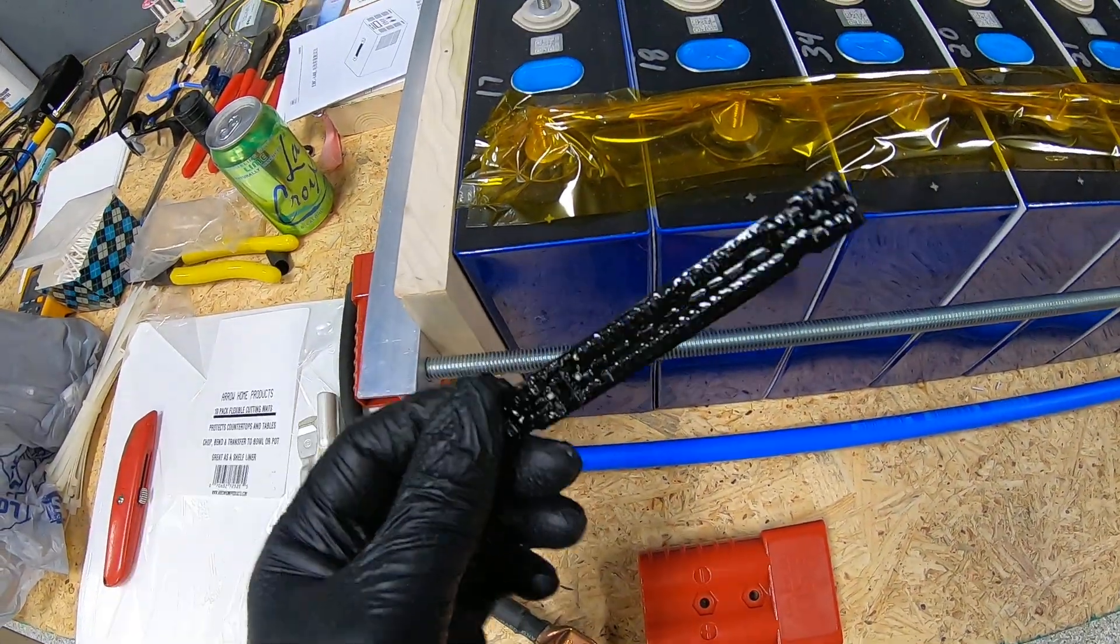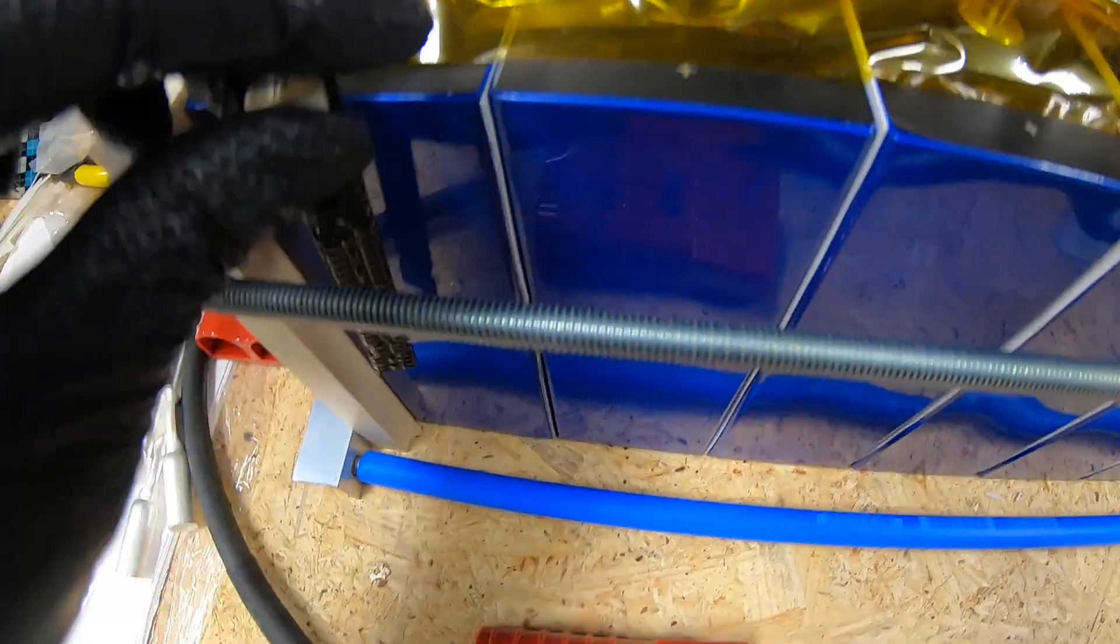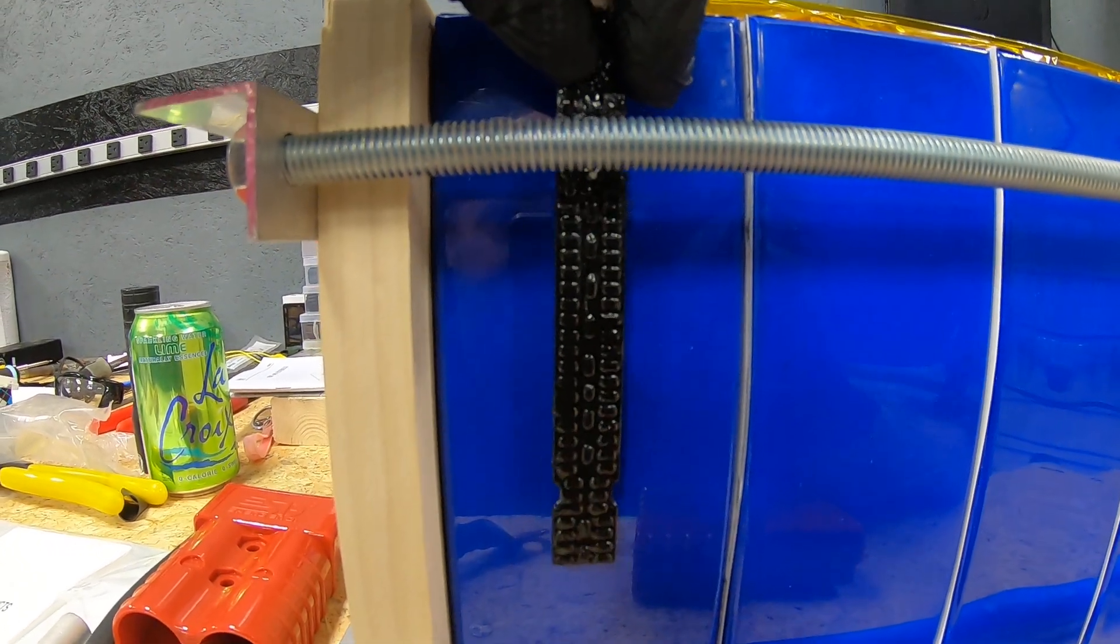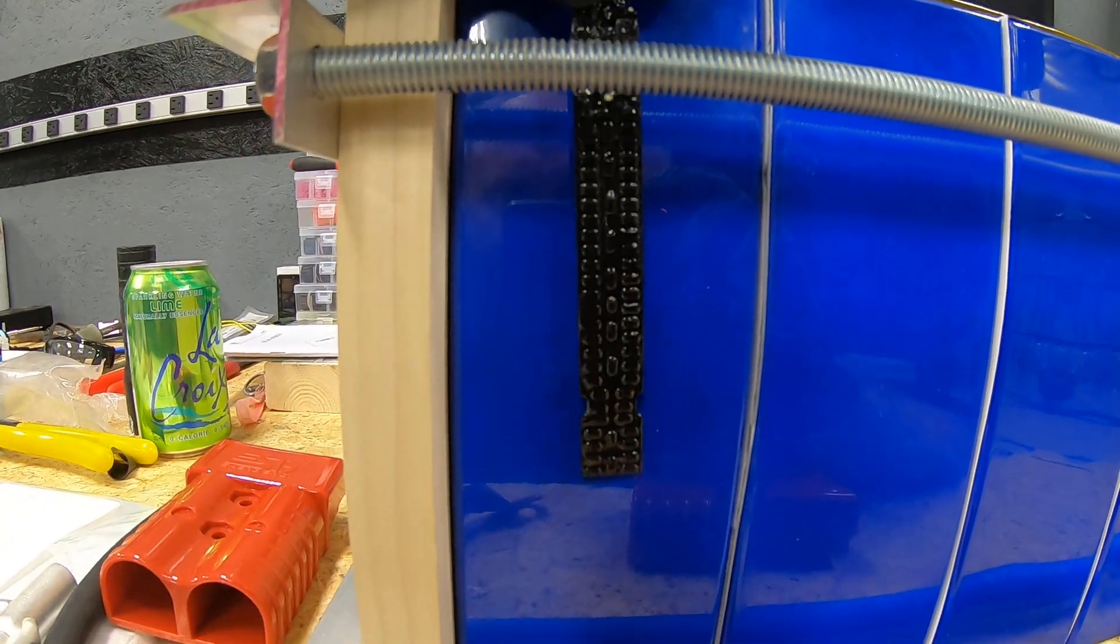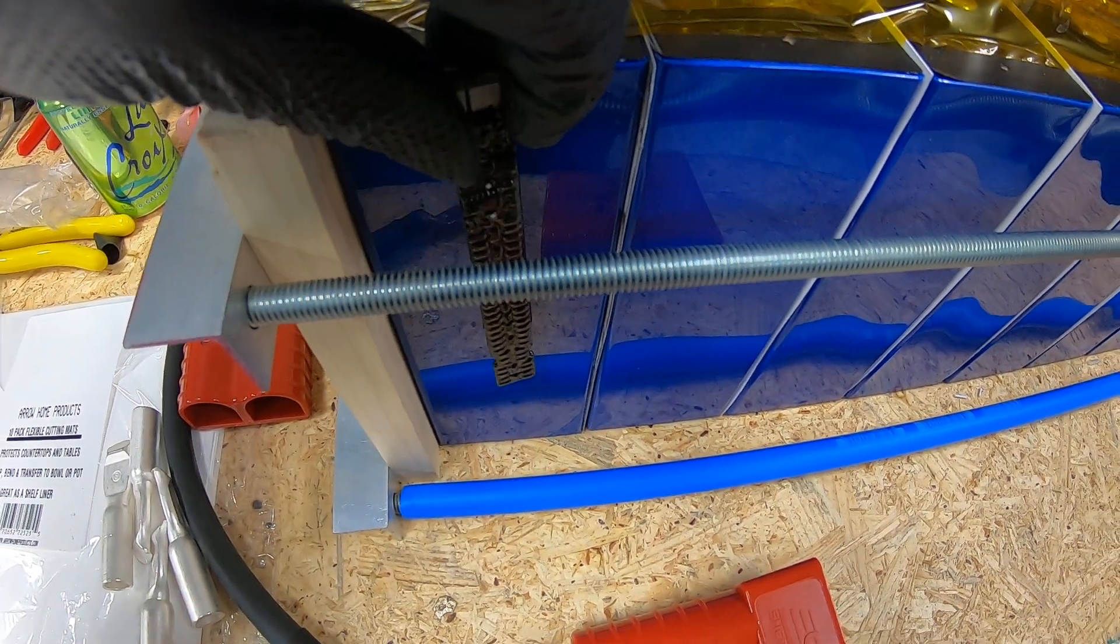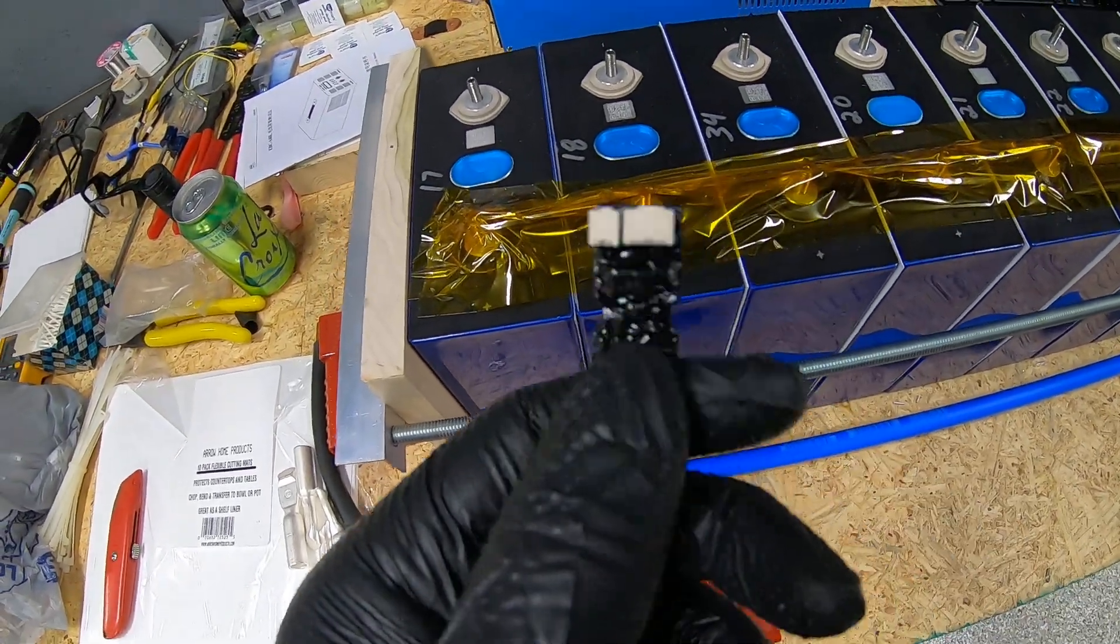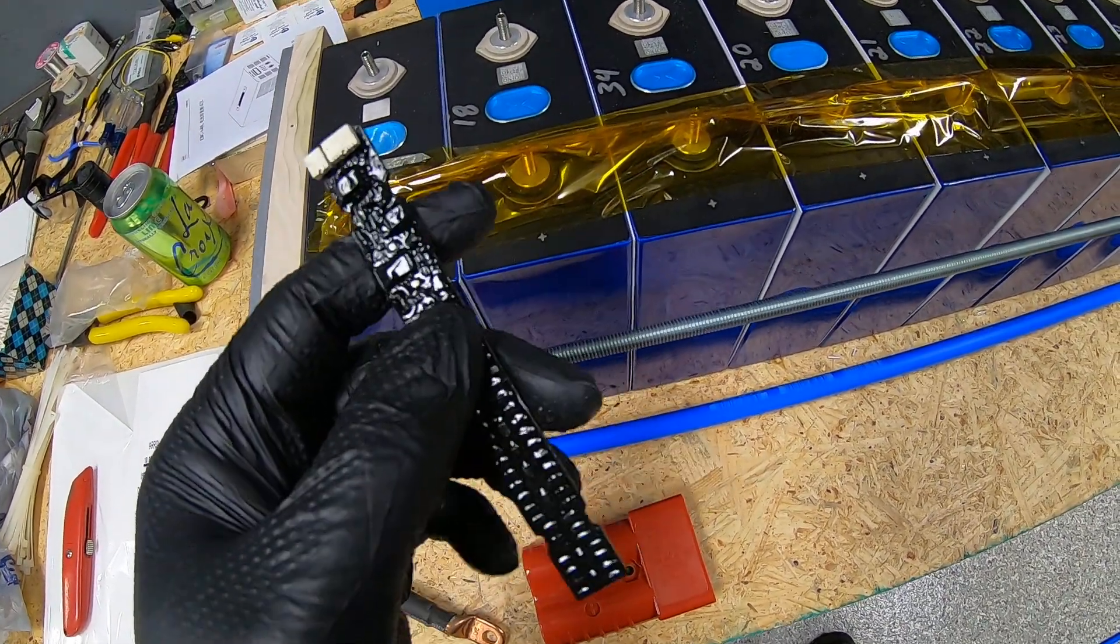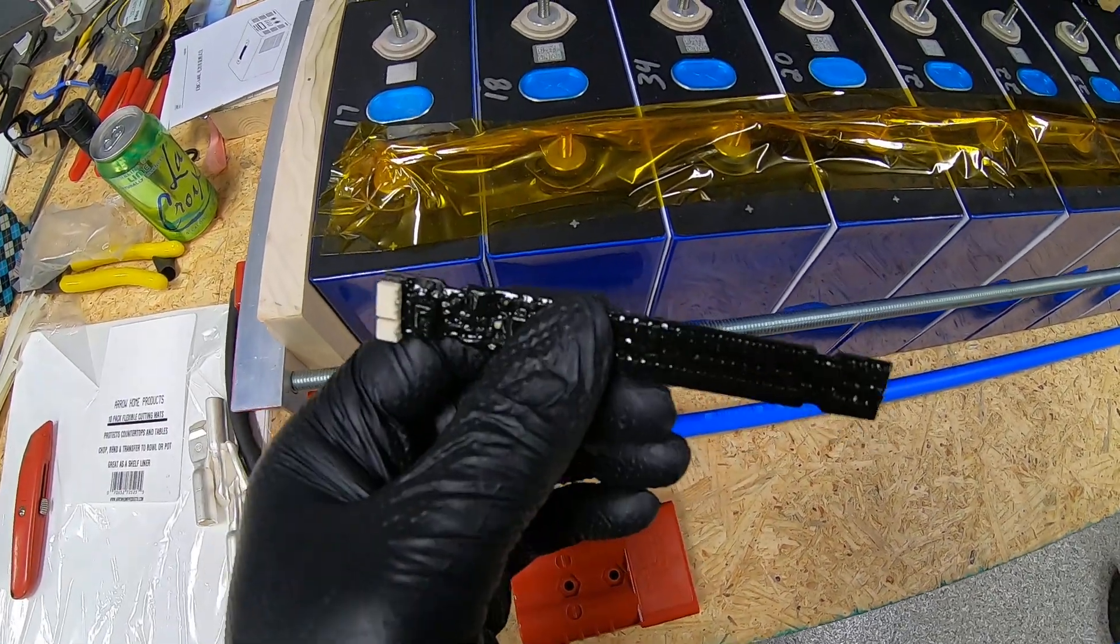That extra space is important for our longmons, which tie into our Batrium BMS. The longmons will mount to the side of the battery with standoffs that stick to the battery, allowing us to tie-wrap them in place. Each cell will have one down the line. These are potted except for the LED at the top. They monitor their own temperature and cell temperature, as well as battery voltage.